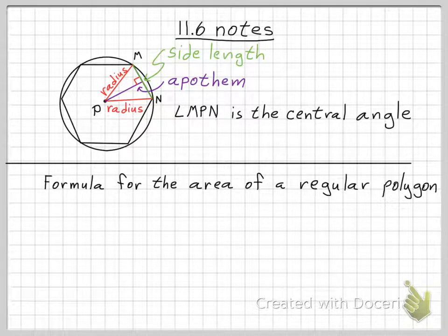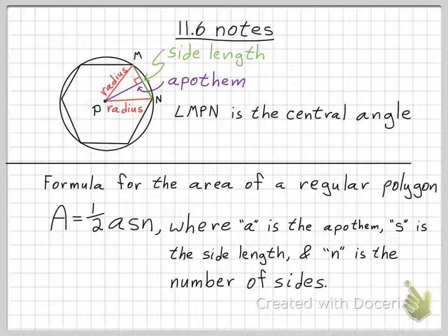So what is the formula for the area of a regular polygon? Area is equal to one-half ASN, where A is the apothem, S is the side length, and N is the number of sides. Write that down — if you need to pause this presentation, you can, but I'm going to continue.